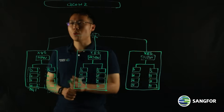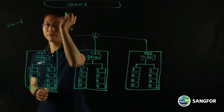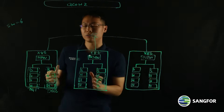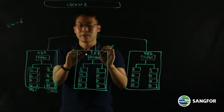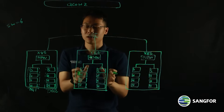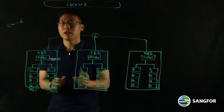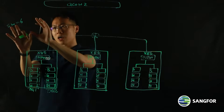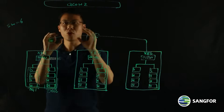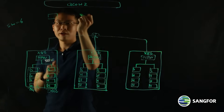In this case, we will have a stripe width of 6. The number of the stripe width cannot be larger than the minimum number of hard disk drives on any particular node in the cluster. Accordingly, the QCOW2 will be broken down into 6 fragments.